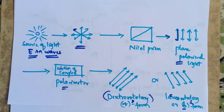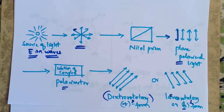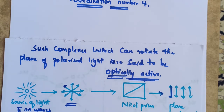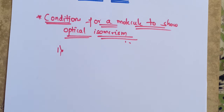It is about optical activity. Such compounds which can rotate the plane of polarized light are called optically active. By this explanation, we came to know that such complexes which can rotate the plane of polarized light are said to be optically active. If the complexes rotate the plane of polarized light towards the left or right side, they are said to be optically active. This property possessed by the complex is called as optical activity.